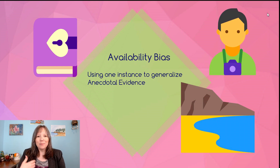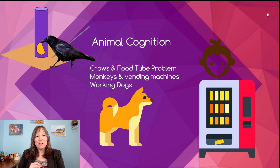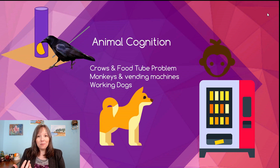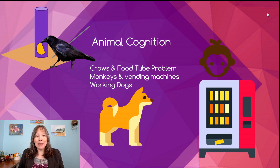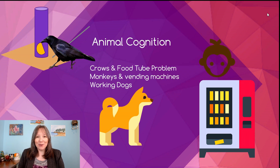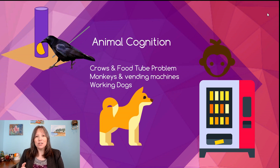When we're thinking about problems and solutions, it's important to understand that humans are not alone in these endeavors. Animals have learned to conquer very complex problems — think about working dogs like police search dogs or guide dogs, and monkeys that have been trained to use vending machines. Animals have also been found to solve really complex novel problems with no conditioning at all.